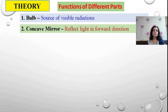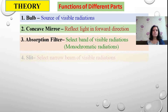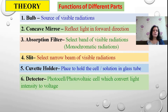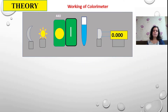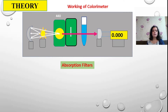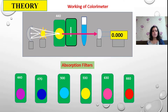This bulb acts as a source of light. A concave mirror reflects light in the forward direction. Absorption filters are made up of two glass sheets embedded with inorganic colored pigment — that is the process to form the absorption filter. Then slits, then a cuvette holder to hold the colored solution, a detector where a photo cell or photovoltaic cell is used, an amplifier, and a display. When you give the source of light to the filter, it passes through the colored solution and the digital display shows you the reading. These are the inbuilt absorption filters usually placed inside the colorimeter.